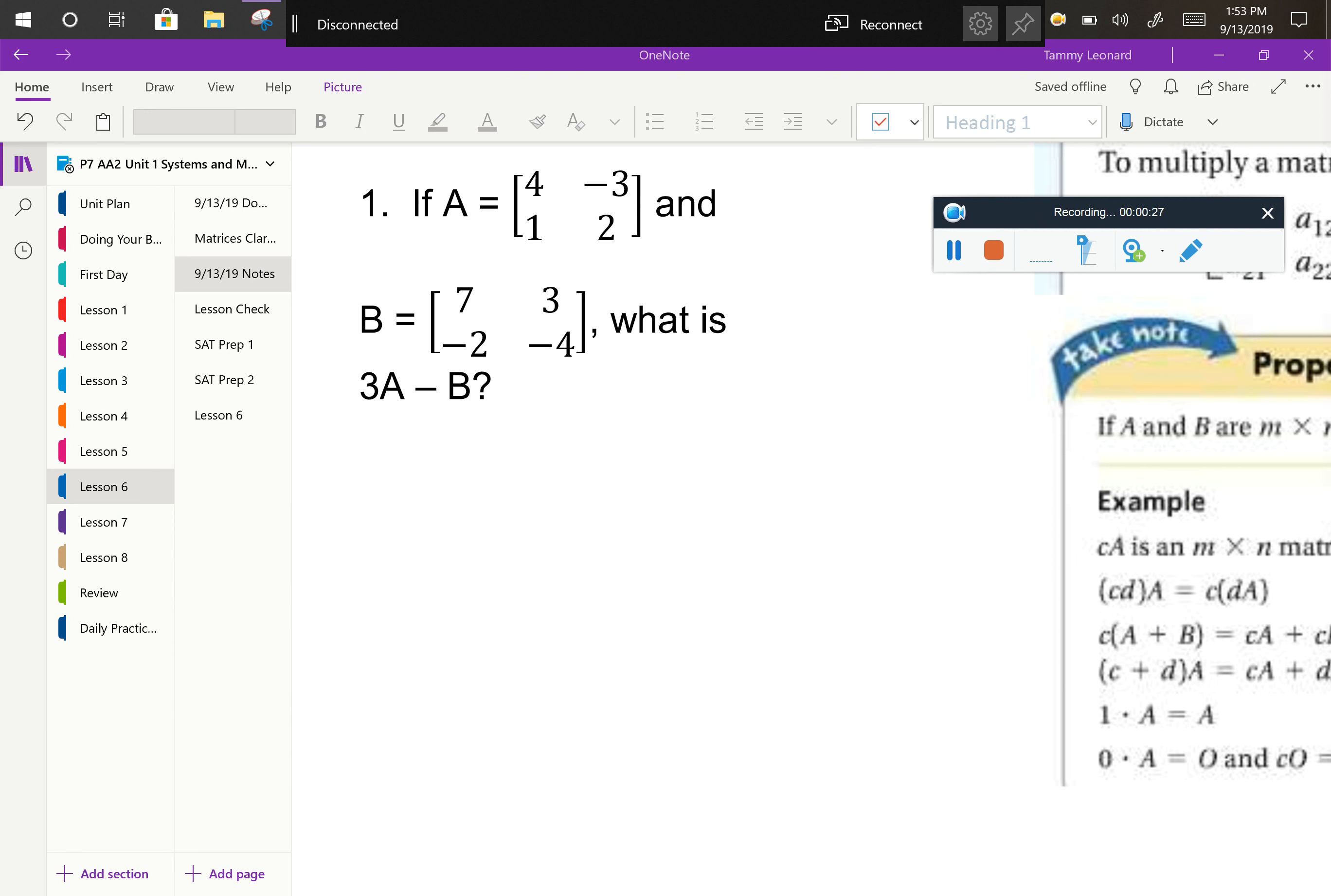because it's the first place that we're going to see scalar multiplication officially come up. This says, if A is equal to 4, negative 3, 1, 2, and B is the matrix 7, 3, negative 2, negative 4, what is 3A minus B?